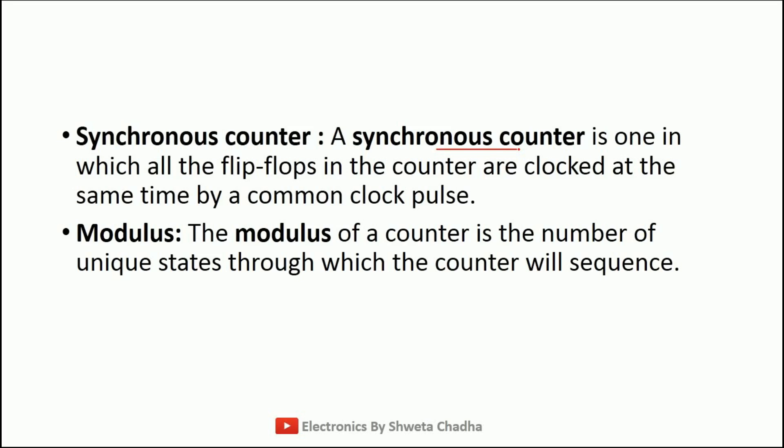Next is modulus. This modulus is a very important term. A modulus of a counter is the number of unique states through which the counter will sequence. That means the total number of states a counter can count is known as modulus. For example, a 2-bit counter can count 0, 1, 2, 3. Hence, the modulus of a 2-bit counter is 4.